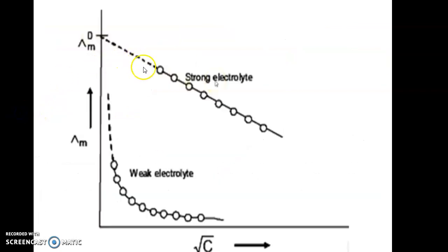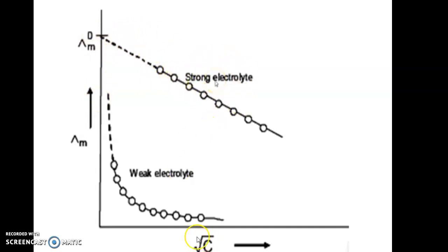Let us consider this graph. On the x-axis, we have the square root of concentration (root C); on the y-axis, we have molar conductance. This is the graph for a strong electrolyte. As concentration increases along the x-axis, we move from high dilution toward lower dilution.